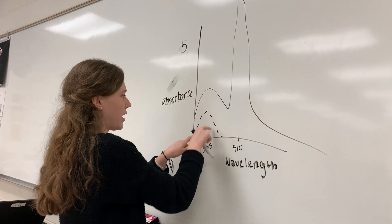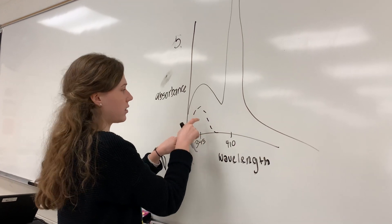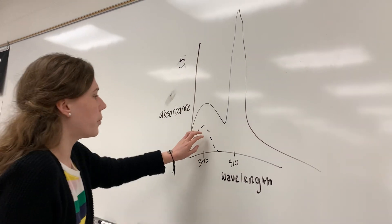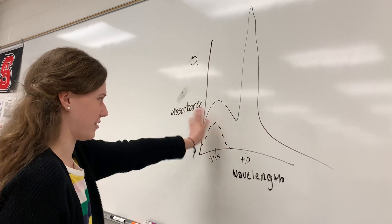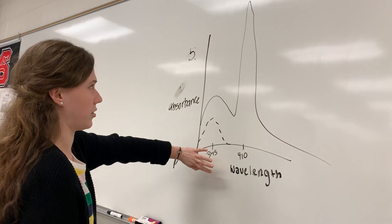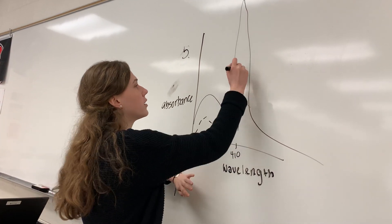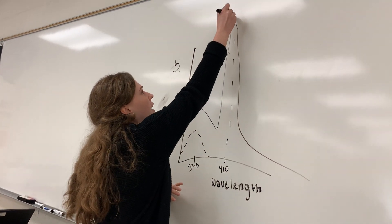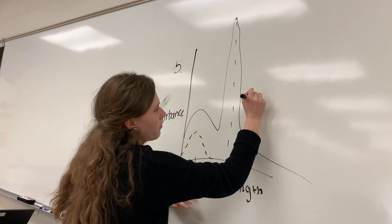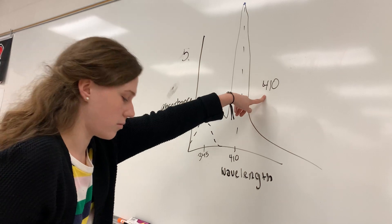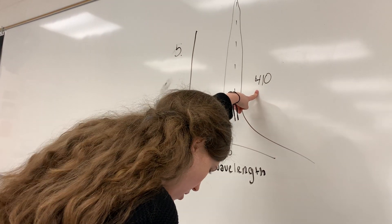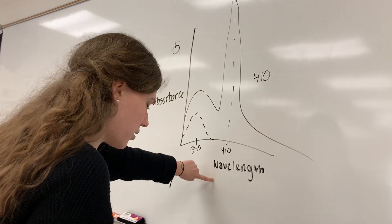While this dotted line is the colorless solution, but we don't care about the colorless solution, so we can basically just not worry about this side of the graph and only look at this side. And at this peak right here it's 410, the wavelength, so we know that's going to be our wavelength. So we can eliminate A.